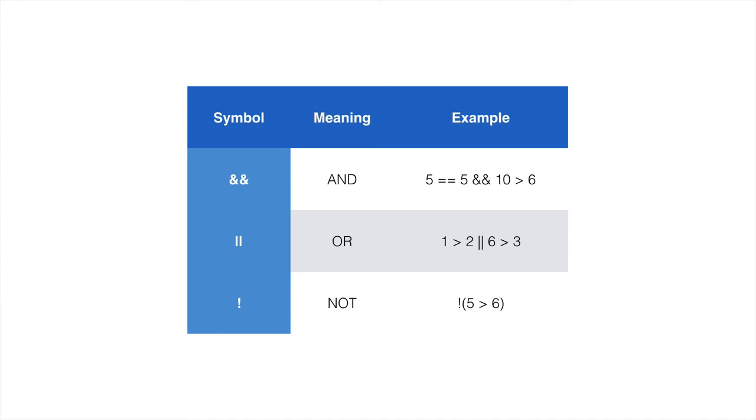And this means or, so 1 is greater than 2 is false, but 6 is greater than 3. So false or true evaluates to true. Simply because you evaluate the whole expression to true if any of them is true. Finally, the last one is the exclamation mark, and we've seen this already. It means not. So 5 is not greater than 6. So 5 greater than 6 is false, but not false is true because it is the inverse.